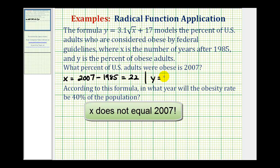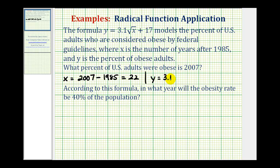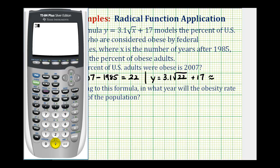So we'll have y equals 3.1 times the square root of 22 plus 17. To evaluate this, we're going to use the calculator: 3.1 times the square root of 22, and it's important to close the parentheses and then add 17. Rounding to the nearest tenth of a percent, in 2007 approximately 31.5 percent of the adult population will be obese, at least according to this formula.